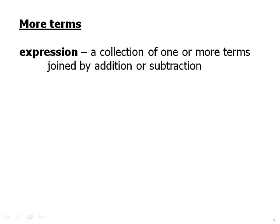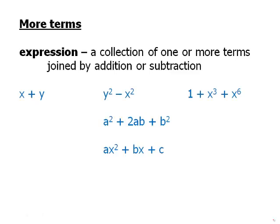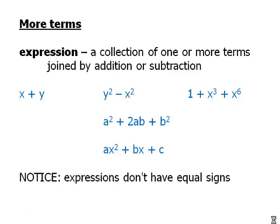An expression is a collection of one or more terms joined by addition or subtraction. So all of these are examples of algebraic expressions. Notice, expressions don't have equal signs. So once we get into the business of taking an expression and setting it equal to a number and solving, well then we're talking about algebraic equations. We'll get there, but that's not what these first few videos are about. Here we're talking about individual expressions. Each expression by itself is a thing without an equal sign. That's very important to realize.